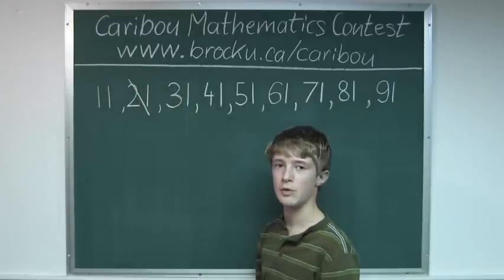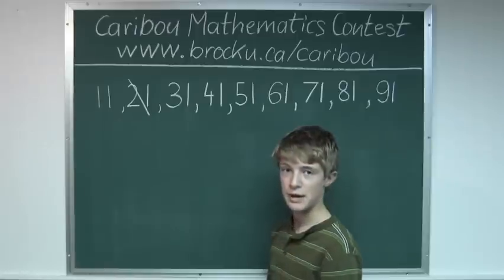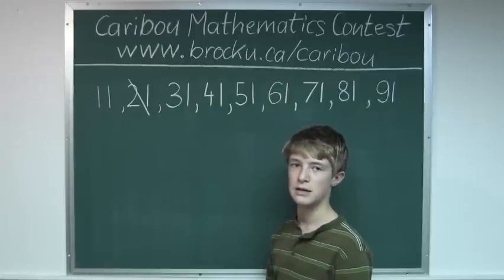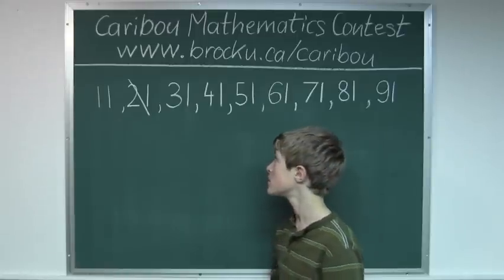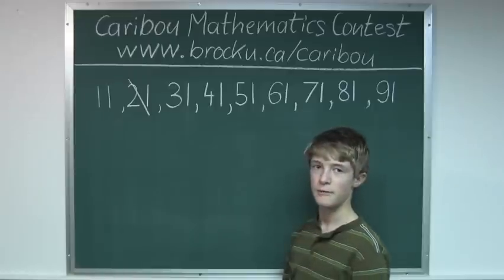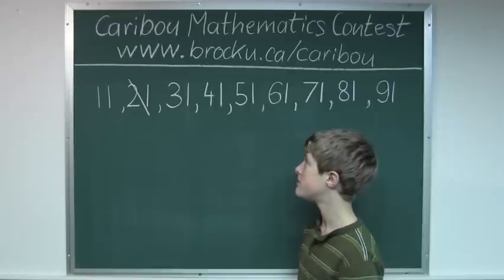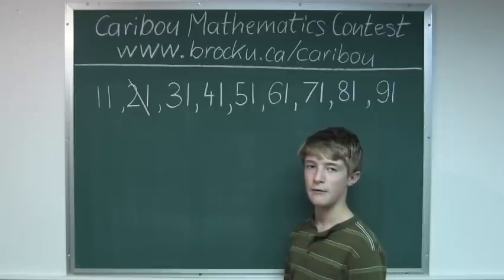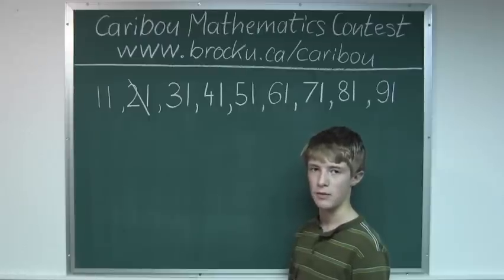Now thirty-one: three plus one is four, and four is not divisible by three. Now forty-one: four plus one is five, but five is not divisible by three.